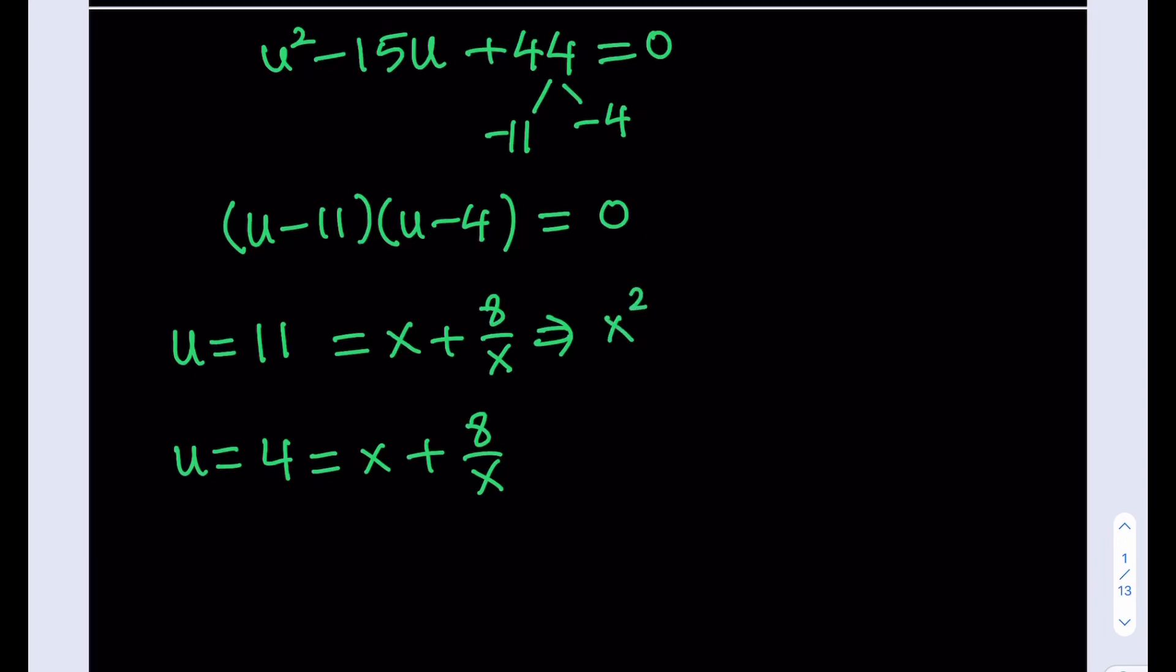So we're going to get x squared plus 8 equals 11x. And then what I'm going to do is I'm just going to go ahead and put everything on the same side. x squared minus 11x plus 8 is equal to 0. That's going to be one of our equations.